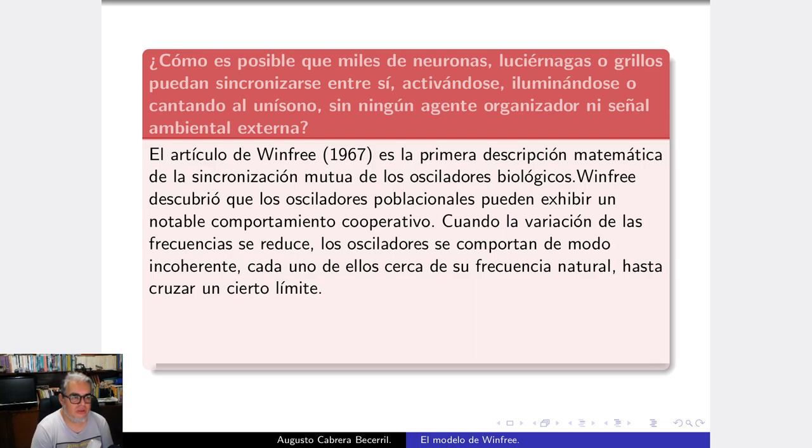Lo que él plantea es cómo es posible que miles de neuronas, luciérnagas o grillos puedan sincronizarse activándose, iluminándose o cantando al unísono sin ningún agente organizador ni señal ambiental externa. Esto es una pregunta que se hace Winfree en un artículo de 1967, que es en principio la primera descripción matemática de la sincronización mutua en osciladores biológicos. Es la primera vez que se habla de sincronización en osciladores biológicos.